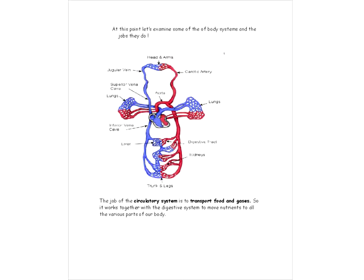Okay. So, at this point, let's examine some of the different body systems and the jobs they do. So, you can see here this diagram is showing us one of the circulatory systems which has the job of transporting food and gases all over. Kind of like a highway system. Now, the circulatory system, because it's transporting food, it kind of works together with the digestive system to move nutrients to all the different areas of the body where those nutrients are needed.